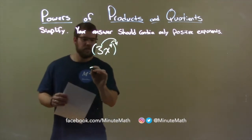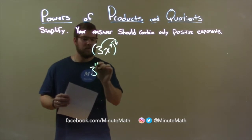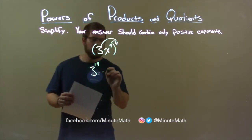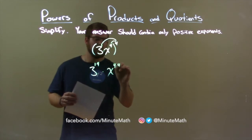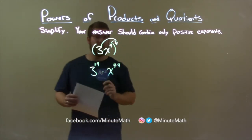So, what this breaks down to is 3 to the 1 times 4 power times x to the 4 times 4 power. We multiply the exponents here.